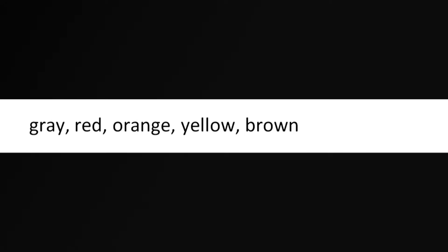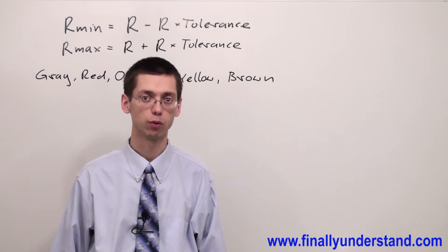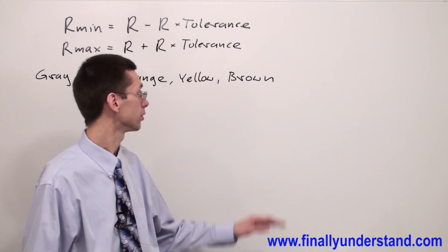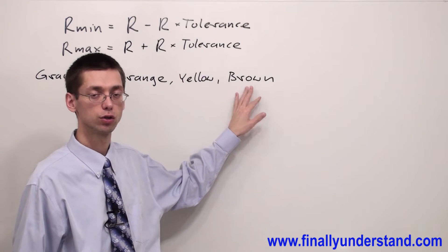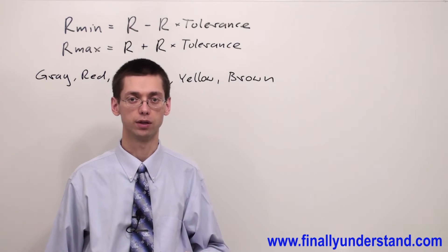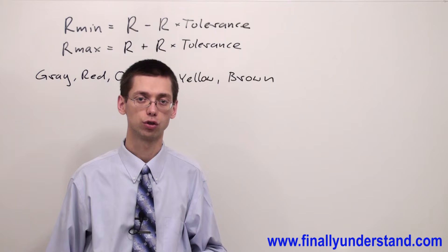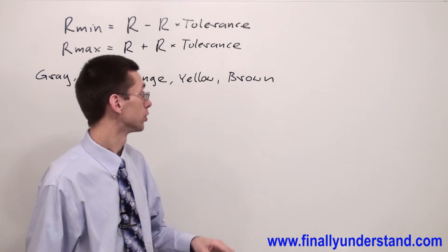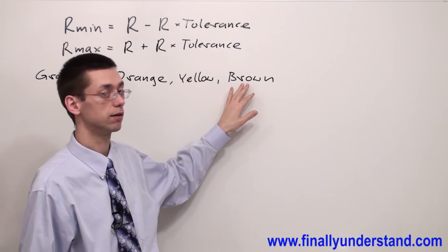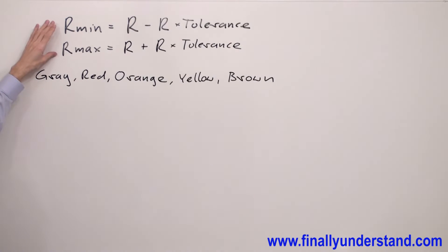This time we're going to talk about the minimum and maximum values of the resistance. Why do we have to talk about that? Because we have tolerance. Tolerance means the value of the resistor is not going to be perfect or ideal - it's going to be plus or minus a certain tolerance. In this case I have 1%. I'm going to use the following formulas to find minimum and maximum values.